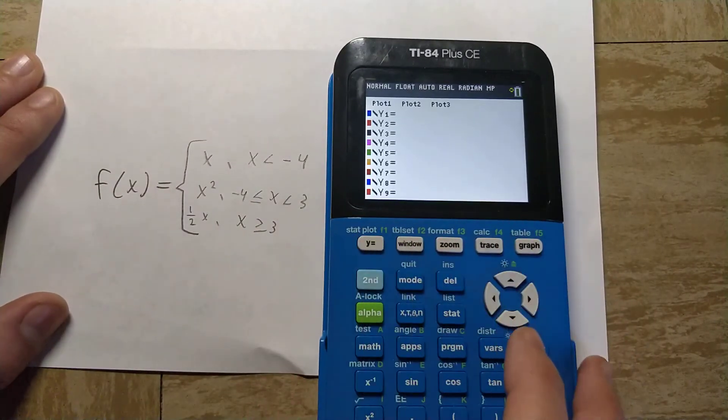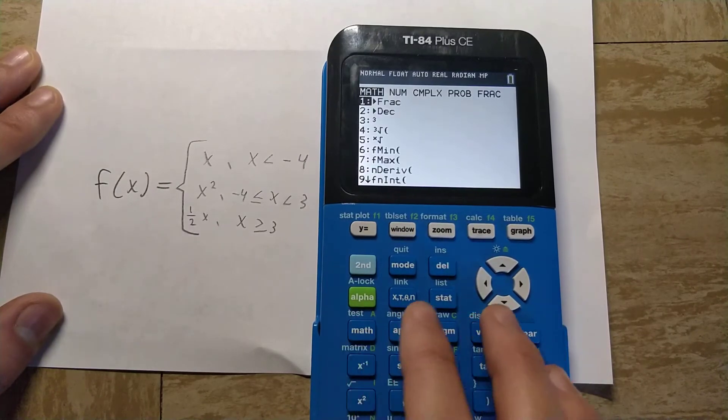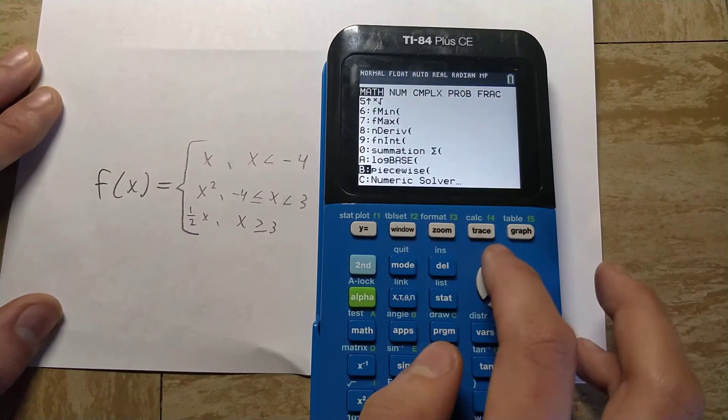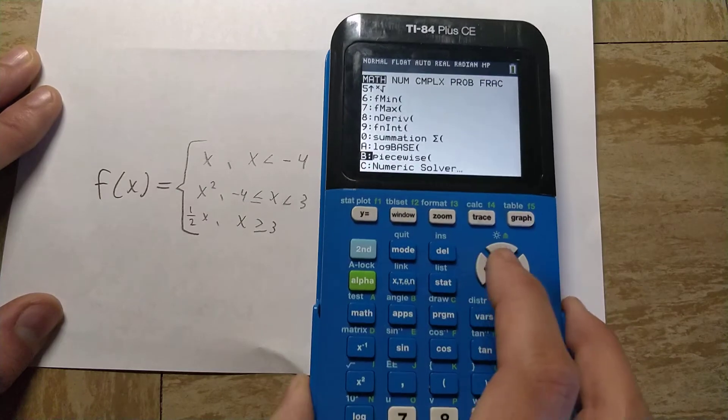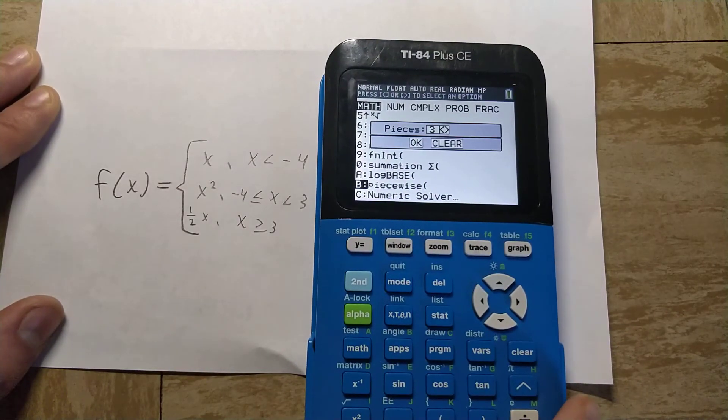Let's go to y equals to enter a function. Then to enter a piecewise function, press math, press the up arrow key, and you'll see that option B is called piecewise. Let's just press enter to select it, and it will ask us how many pieces we have.